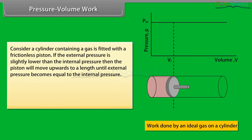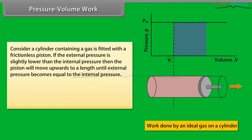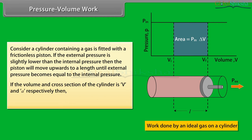Pressure-volume work: consider a cylinder containing a gas fitted with a frictionless piston. If the external pressure is slightly lower than the internal pressure, the piston will move upwards until external pressure becomes equal to the internal pressure. If the volume and cross-section of the cylinder are V and A respectively, then the work done by the system equals P × A × L, which equals P × ΔV.